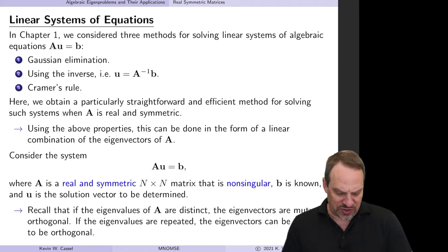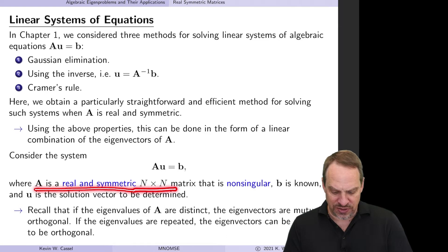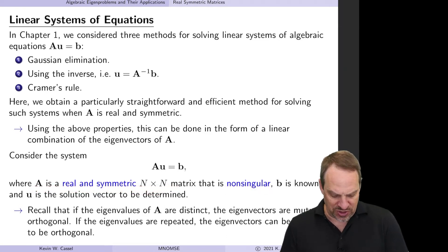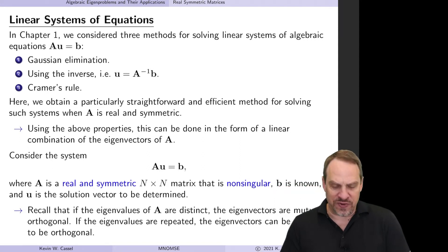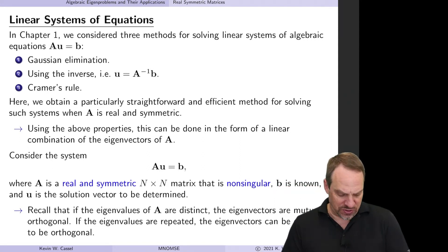So we have a matrix A, U equals B. A is real and symmetric, it's n by n, and it's non-singular so that we have a unique solution to the system of equations. B is a known right-hand side vector, and we'd like to determine the vector U.